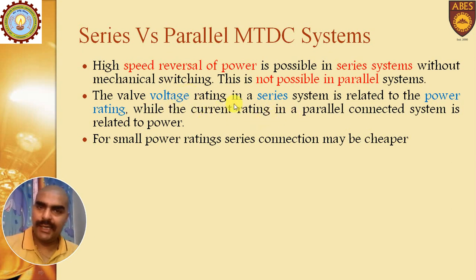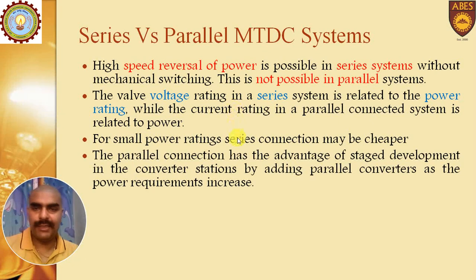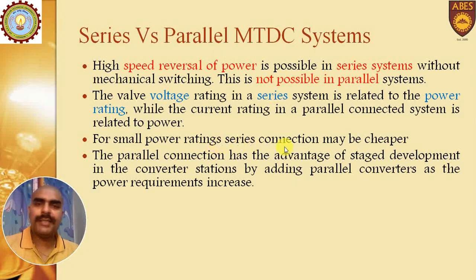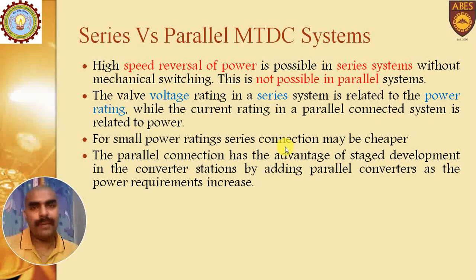Accordingly, voltage and current ratings are related to power in the respective MTDC systems. For small power rating, series connection may be cheaper, but parallel MTDC may be more cost-effective overall. The parallel connection has the advantage of stage development in converter stations by adding parallel converters as power requirements increase in phases.